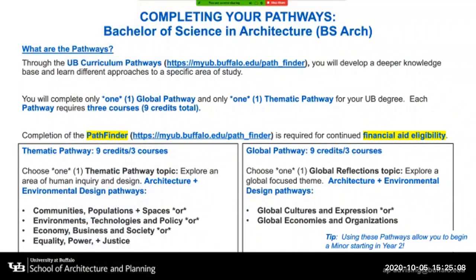The UB curriculum pathways are two important components of your general education requirements at UB. Through your pathways, you'll have an opportunity to develop a deeper knowledge base and learn different approaches to an area of study typically related to your major. You will complete only one global pathway and only one thematic pathway for your UB degree. Each pathway requires three courses, or a total of nine credits. Completion of the Pathfinder is required for continued financial aid eligibility.